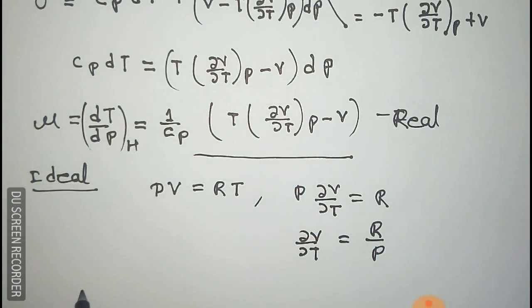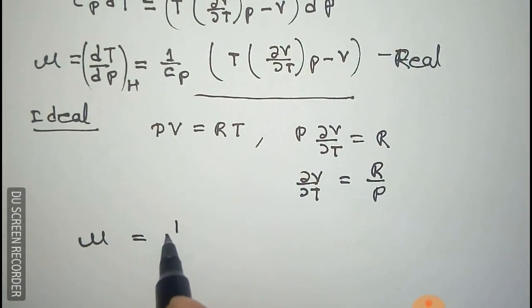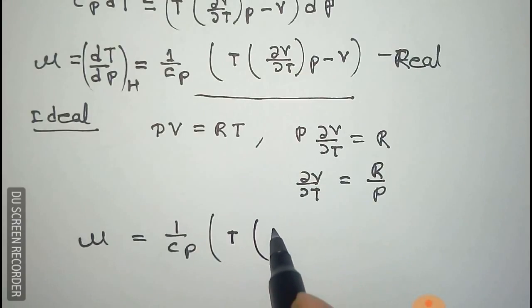Putting this relation in our equation of mu, we get 1 by Cp into (T times R by P minus V).